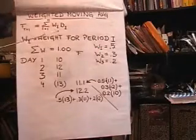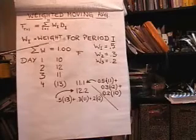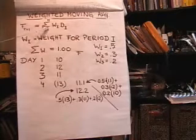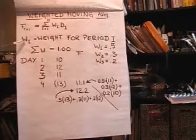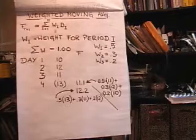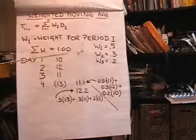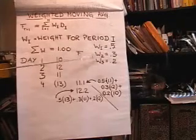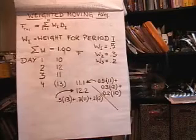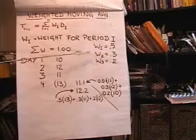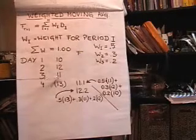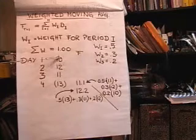A related method is called the weighted moving average method. This is very similar — it's the forecast for the next time period as a summation as i goes from 1 to N of w sub i times d sub i, where the w's are the weights for each period, and the weights sum to 1. Let's say the weight on the most recent is 0.5, the second most recent is 0.3, and the oldest is 0.2. With the regular moving average the weights are implicitly equal at 0.333, but here we set them explicitly. To forecast for period 4: 0.5 times 11 plus 0.3 times 12 plus 0.2 times 10 equals 11.1.